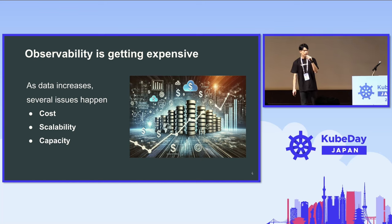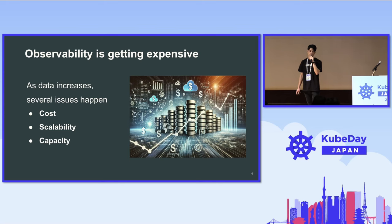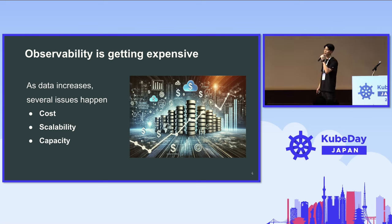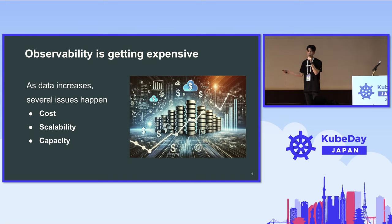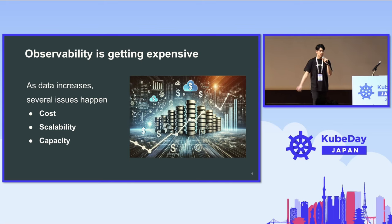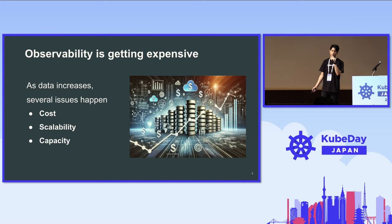Observability is really evolving for many people. This means many people think about saving more data for telemetry, tracing, logs, whatever. So as data increases, several issues show up to accommodate petabyte scale of data in the future — cost, scalability, and capacity issues may appear.